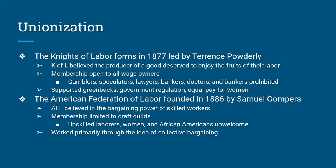The American Federation of Labor was founded in 1886 by a cigar maker named Samuel Gompers, and it was only for skilled workers. If you were an unskilled worker, an African American, or a woman, you were not allowed into the AFL. The AFL worked through the idea of collective bargaining — all the workers would elect representatives, and those representatives would negotiate with management and ownership.